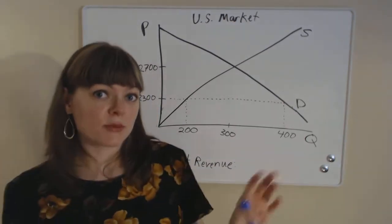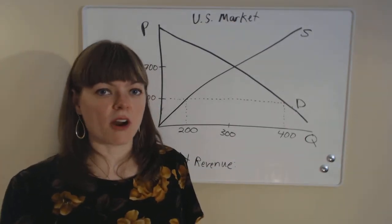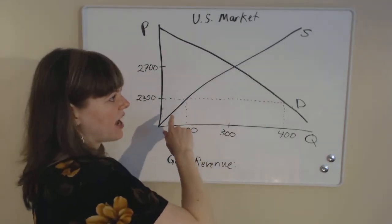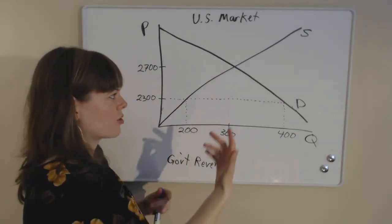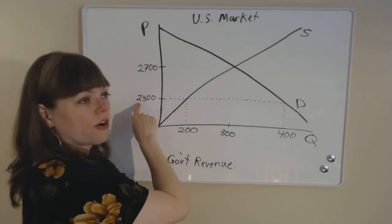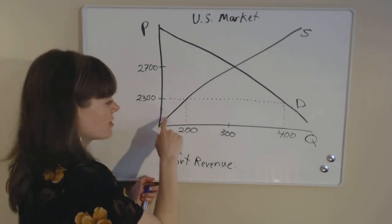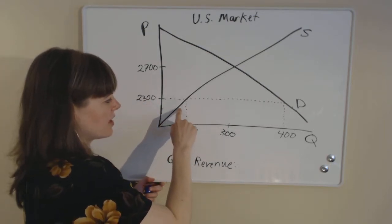So 400 consumers will buy a product. How many U.S. producers will be willing to produce for that product? Well, we have to check all of our producers to ask ourselves, is this producer willing to produce if they're only going to get $2,300? And for some of our producers, the answer is yes.